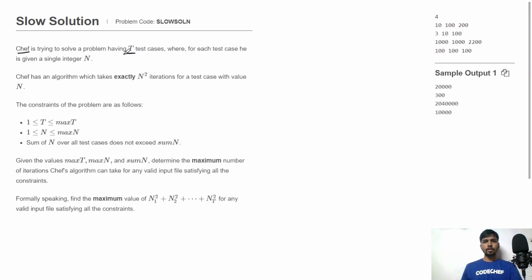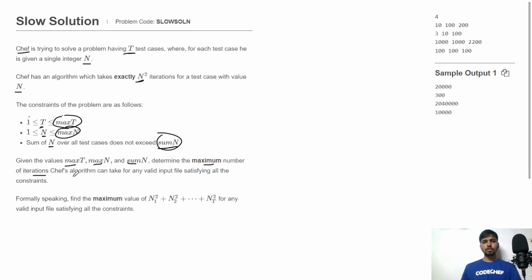Chef is trying to solve a problem having total T test cases. For each test case he is given a single integer N, and Chef has an algorithm which takes exactly N² iterations for a test case with value N. The constraints are: T ranges from 1 to max_T, N ranges from 1 to max_N, and the sum of N over all test cases will never exceed sum_N. Given max_T, max_N, and sum_N, we need to find the maximum value of N1² + N2² + ... + NT² for any valid input satisfying all the constraints.